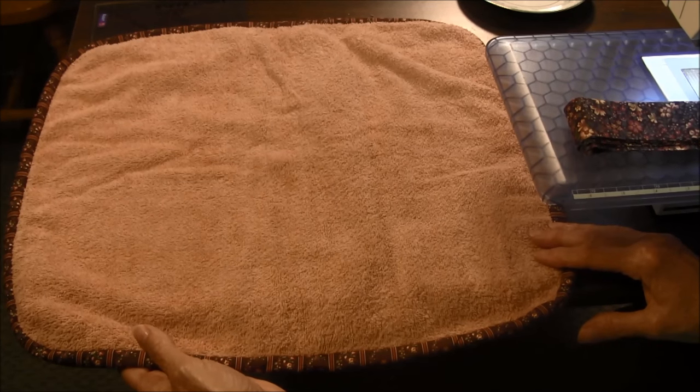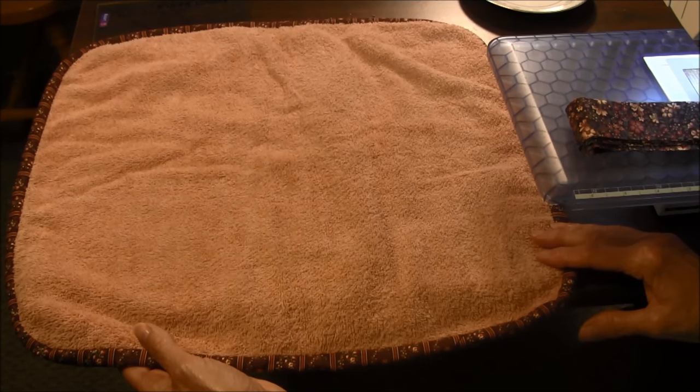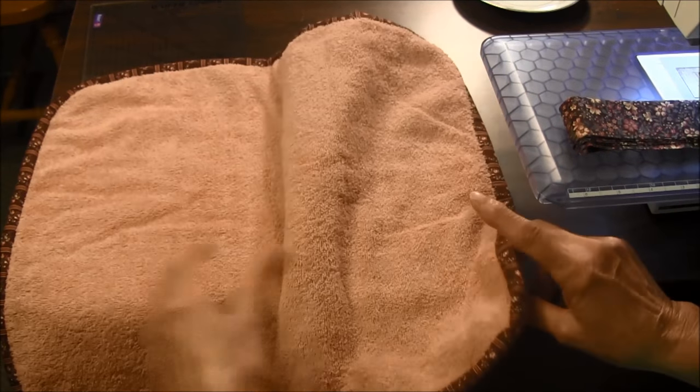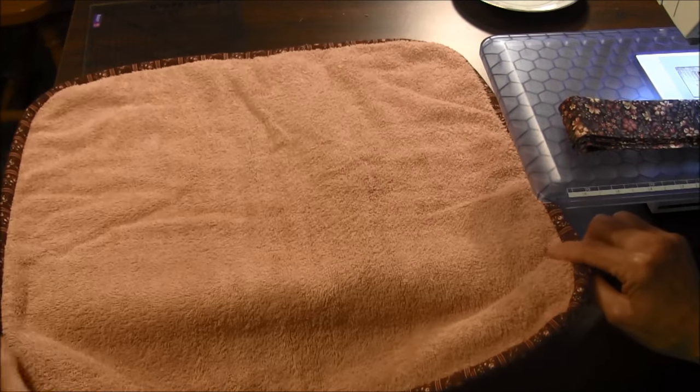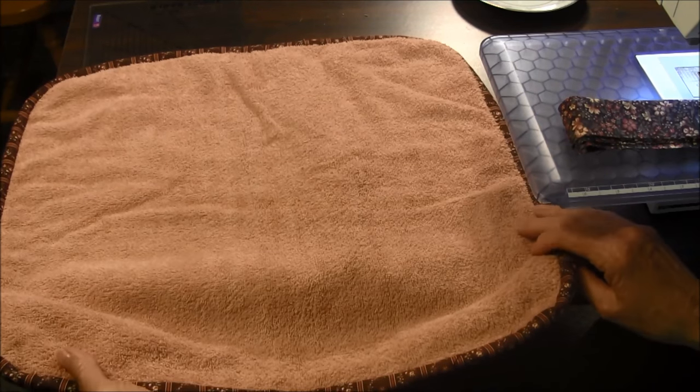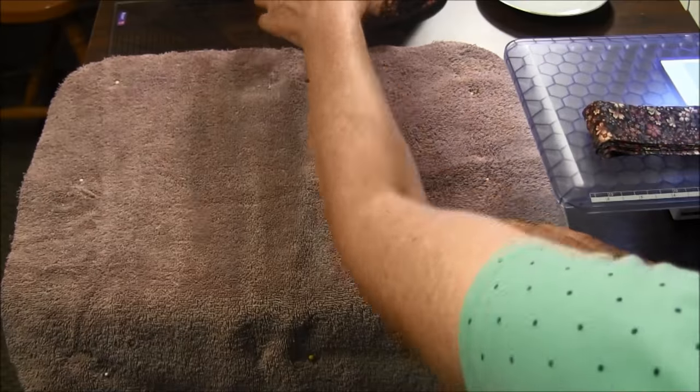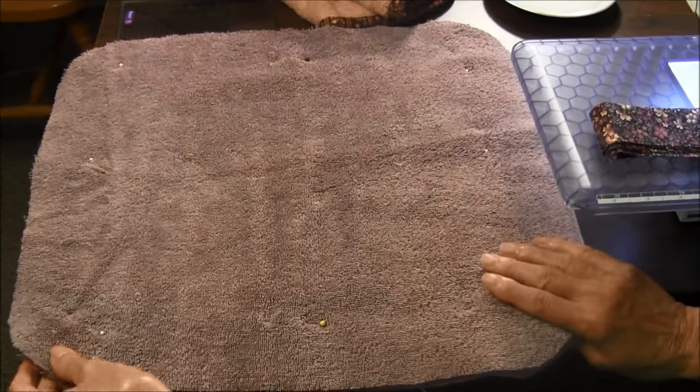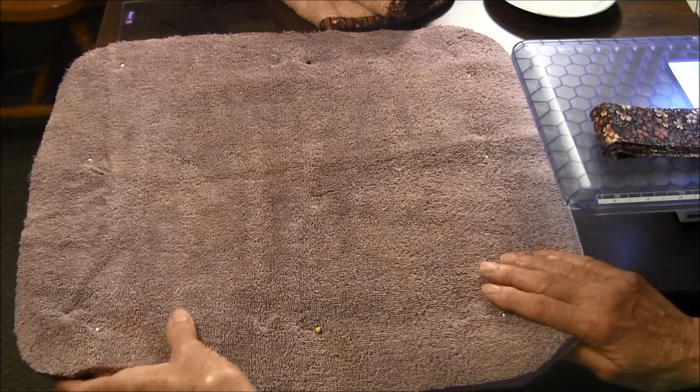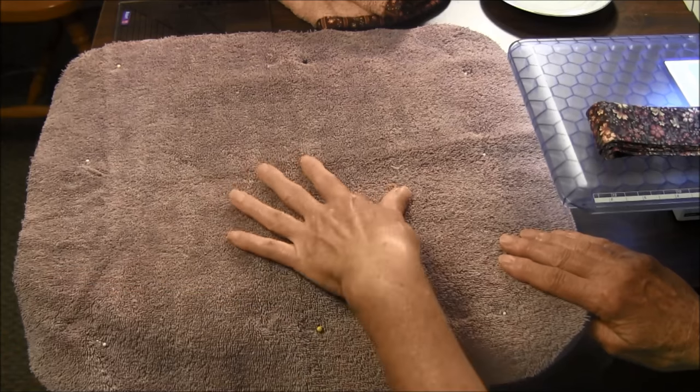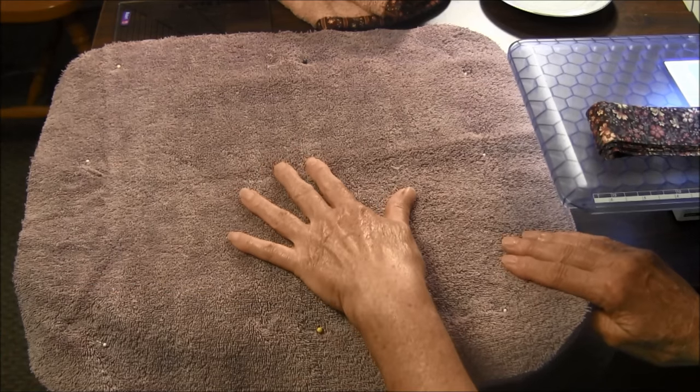This tutorial by NeedlePointers.com will show you how. This is the dish drying mat. I used an old towel and cut it 16 by 18 inches. However, you can cut it any width or length that you wish, whatever would fit next to your sink.